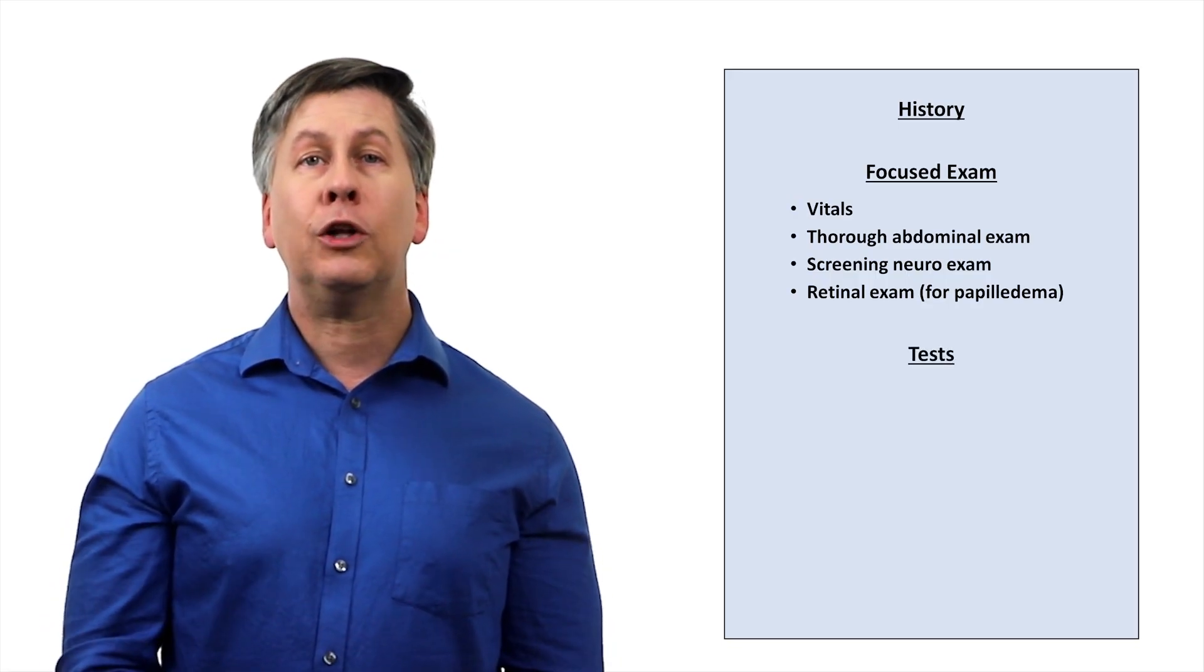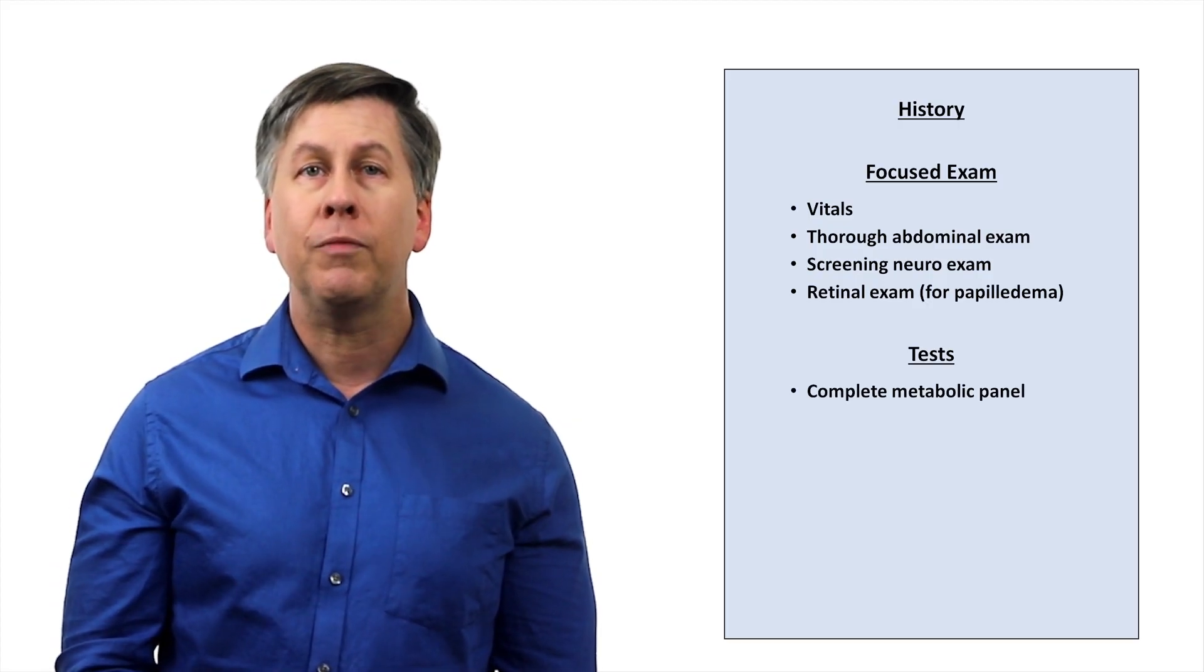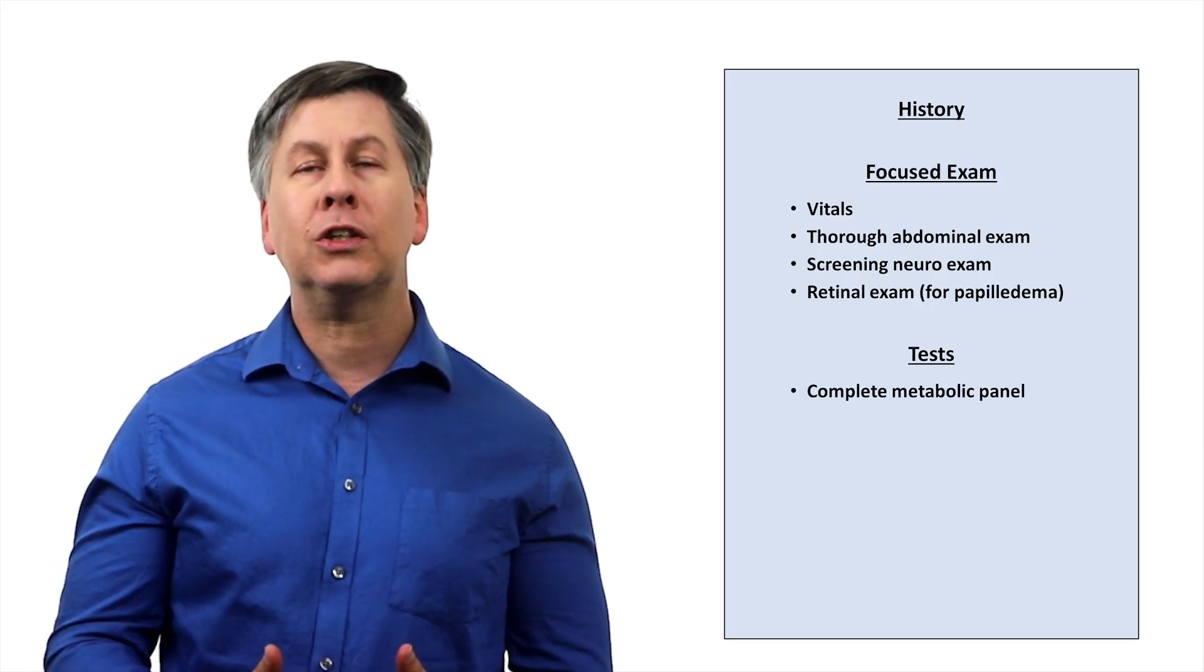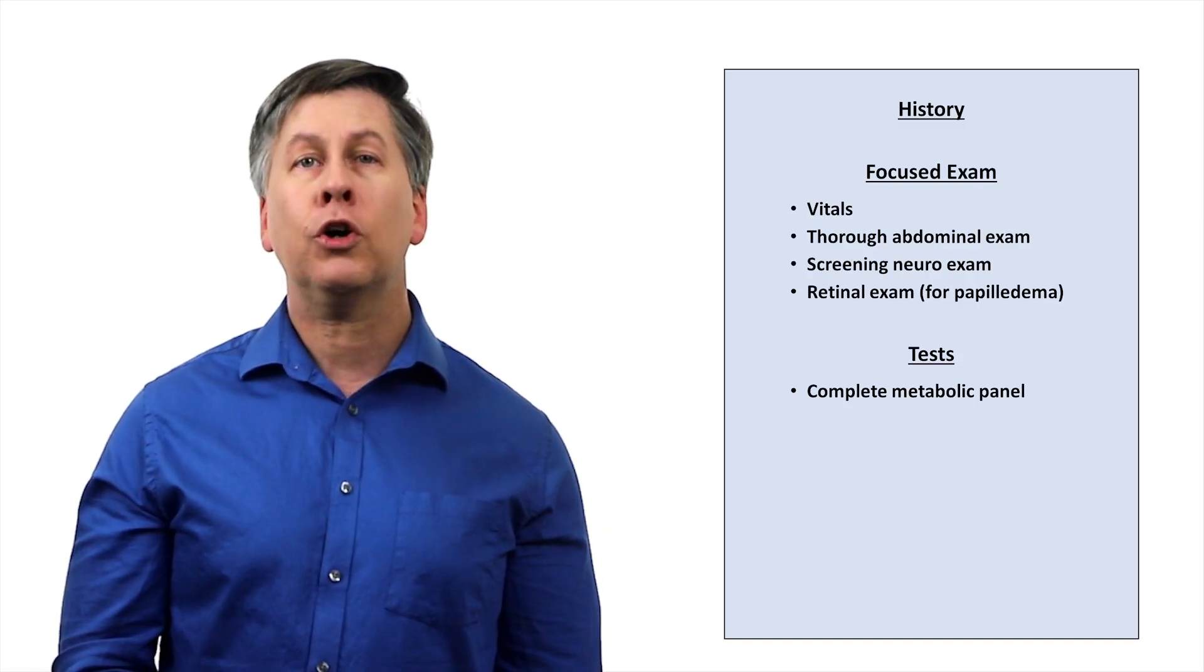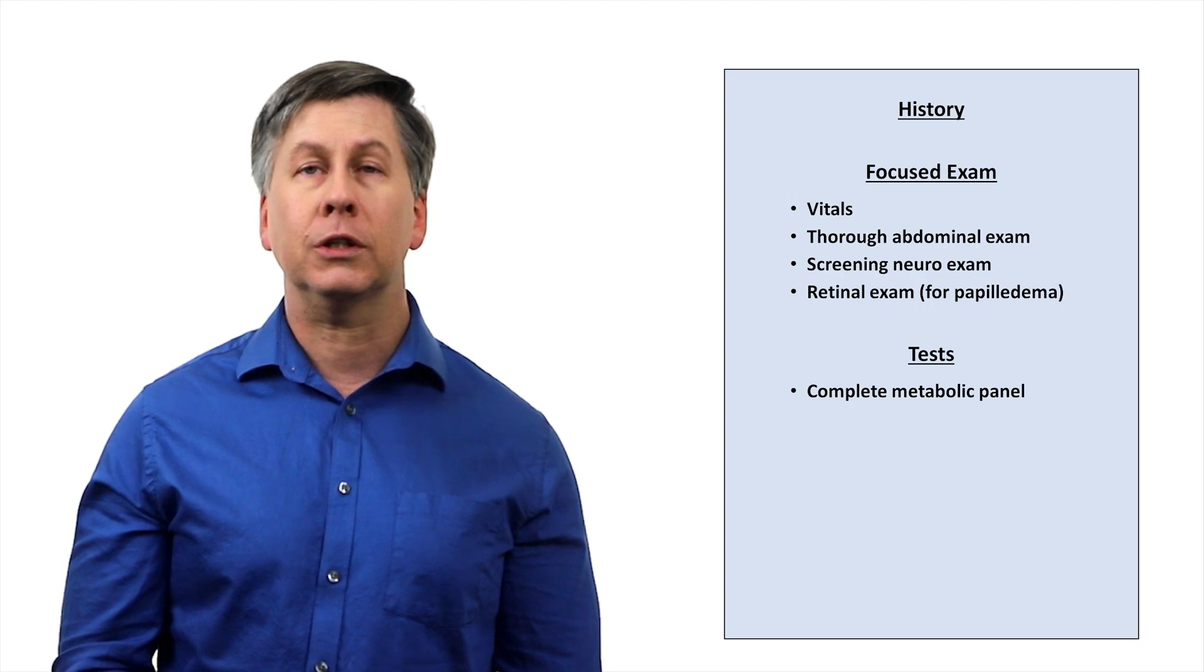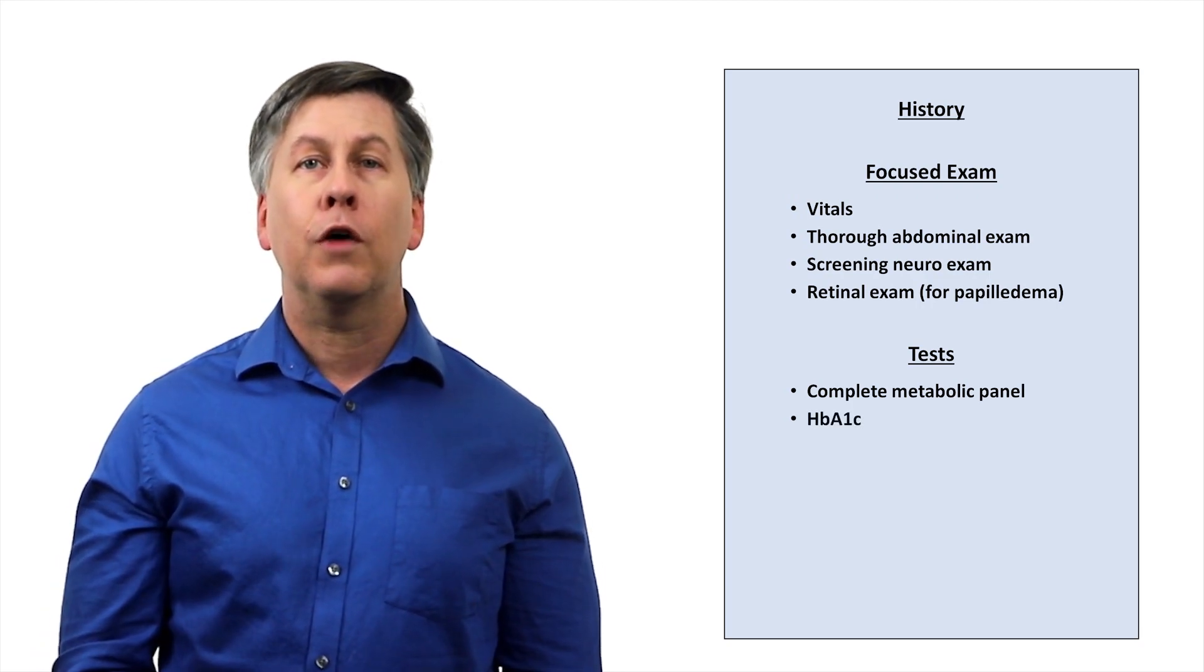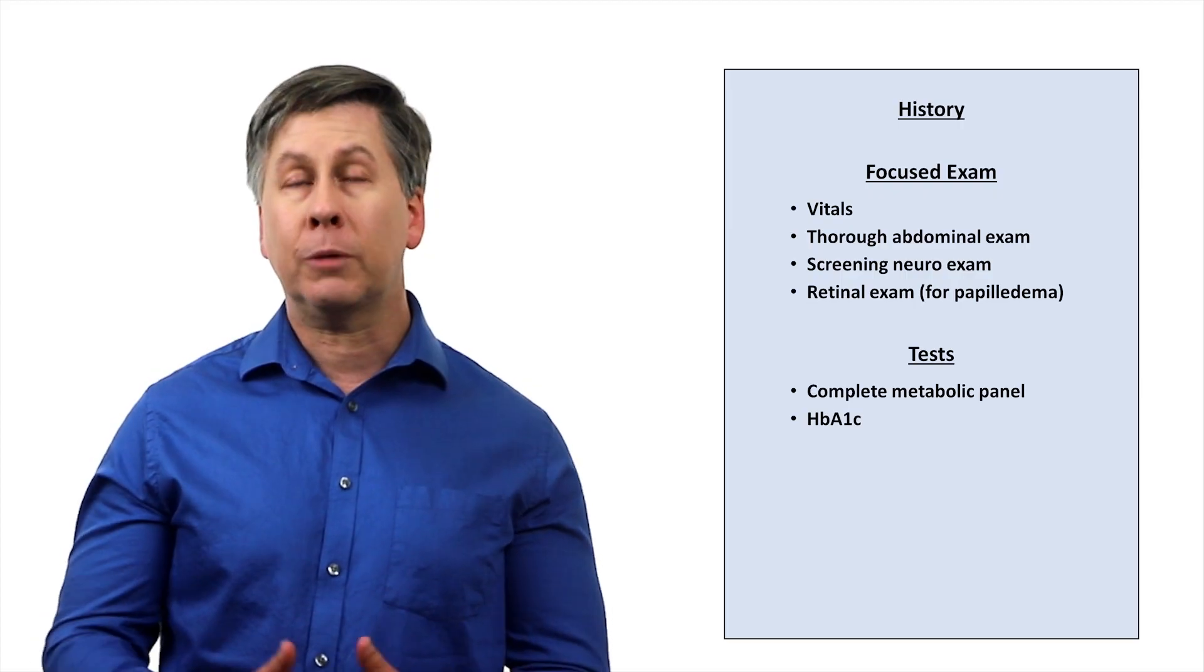Commonly ordered tests include a complete metabolic panel looking both for diagnostic clues as well as looking for complications that chronic nausea and vomiting might cause, like hypokalemia or metabolic alkalosis. A hemoglobin A1c to screen for diabetes, the presence of which increases the risk of gastroparesis as mentioned.